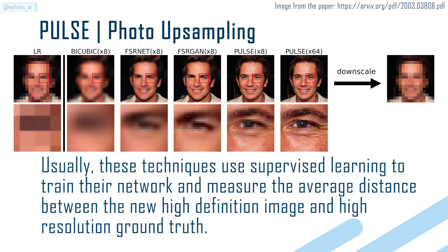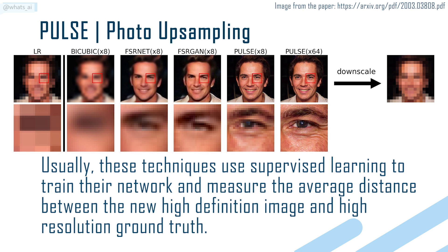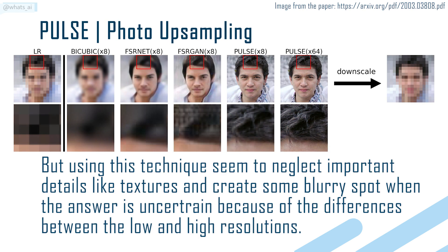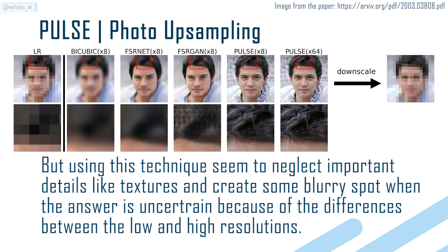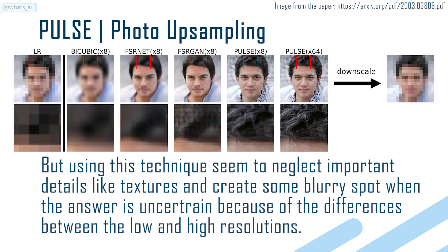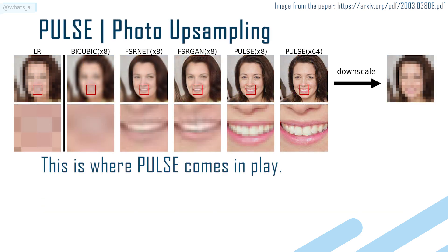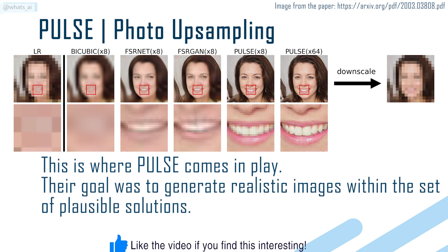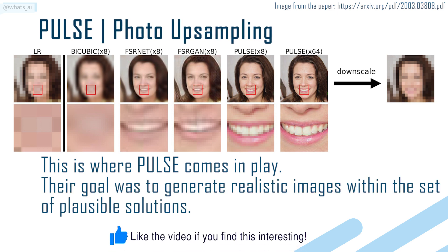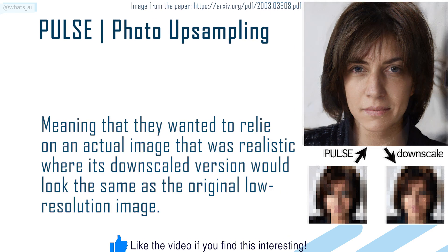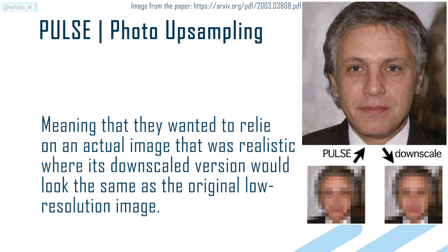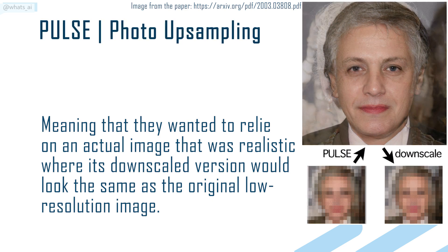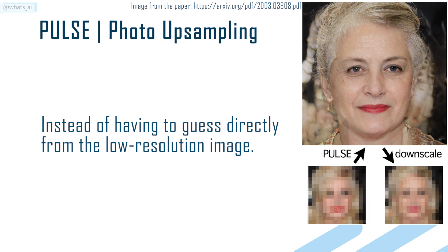Usually, these techniques use supervised learning to train their network and measure the average distance between the new high-definition image and a high-resolution ground truth. But using this technique seems to neglect important details like textures and create some blurry spots when the answer is uncertain, because of the differences between the low and high resolutions. This is where PULSE comes into play. Their goal was to generate realistic images within the set of plausible solutions, meaning they wanted to rely on an actual image that was realistic where its downscaled version would look the same as the original low-resolution image, instead of having to guess directly from the low-resolution image.